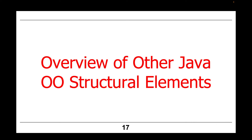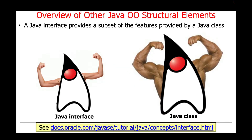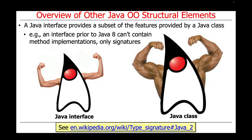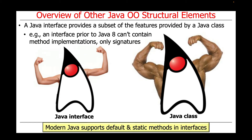We're now going to give an overview of other Java object-oriented structural elements, starting with Java interfaces. A Java interface provides a subset of the features provided by a Java class — you can think of it as the scrawny younger sibling of the bigger class. An interface prior to Java 8 could not contain method implementations, only method signatures or declarations. Modern Java, in other words Java 8 and beyond, now supports default and static methods in interfaces, which is very powerful, and you'll see examples throughout this material.